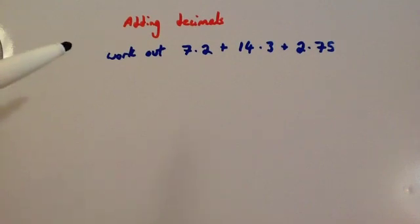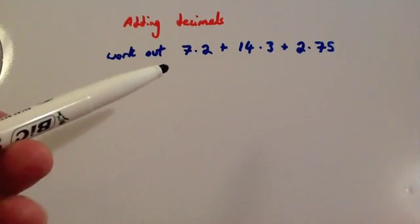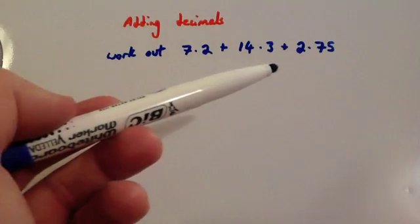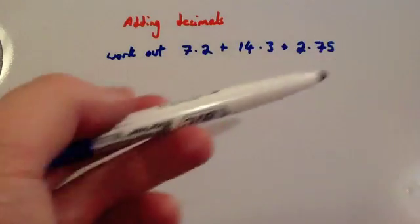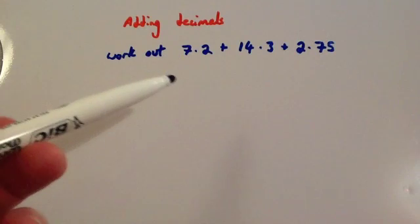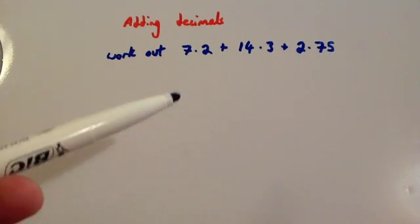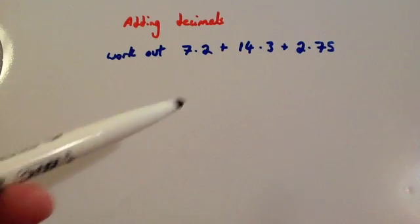In this video we're going to look at adding decimals. So here's an example: 7.2 plus 14.3 plus 2.75. If I was adding these decimal numbers, what I would do is use the column method, and the most important thing is making sure that you line up the decimal points.